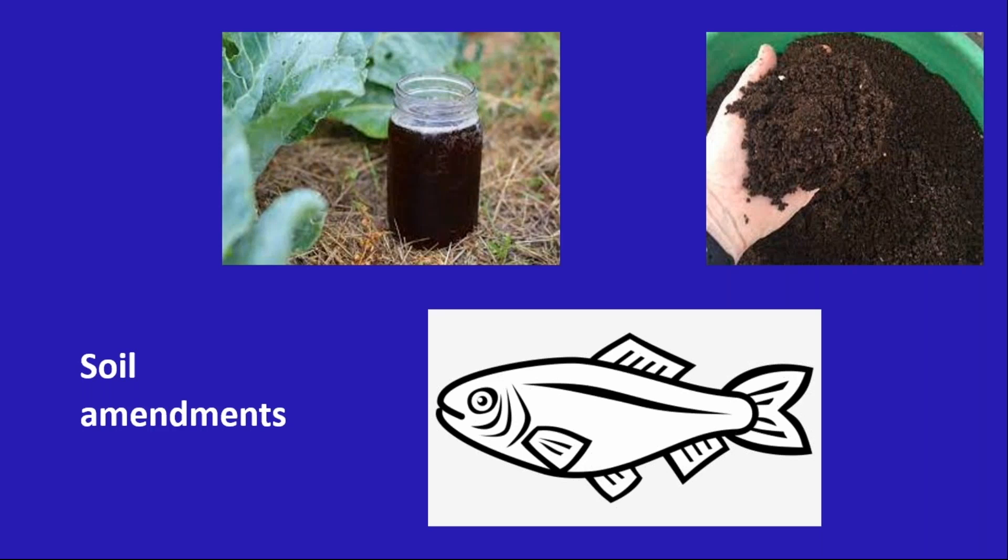Shrimp compost is really good, or anything like kelp or fish emulsion. Anything from the ocean basically is going to have a lot of the mineral nutrients that plants need that you wouldn't get through just your backyard compost. Things like rock dust and bone meal will also add nutrients like calcium, which is really important.